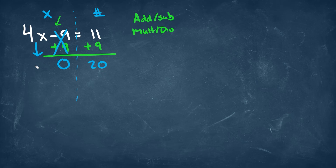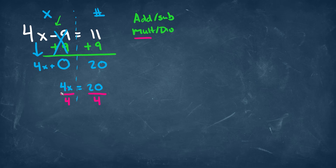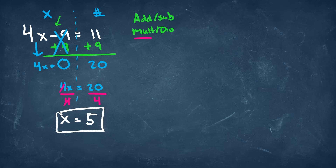We'll drop down this 4x, and now what we have is 4x on the left side is equal to 20 on the right side. What we'll do next is we need to get x by itself. We can think of this as 4 times x, which is multiplication, so we do the opposite by dividing by 4 on both sides. 4 divided by 4 is 1, which cancels that out, and we're left with x on the left side. On the right side, we have 20 divided by 4, which simplifies to 5. And that would be our answer.